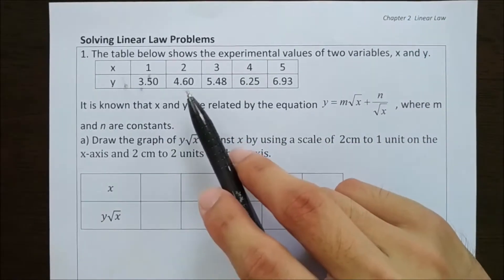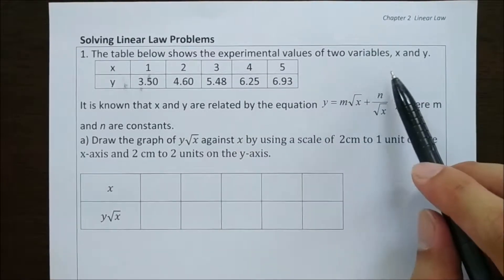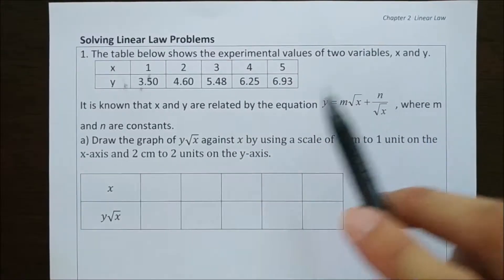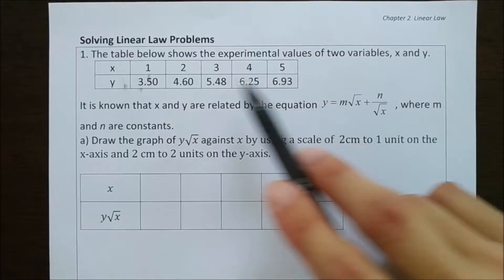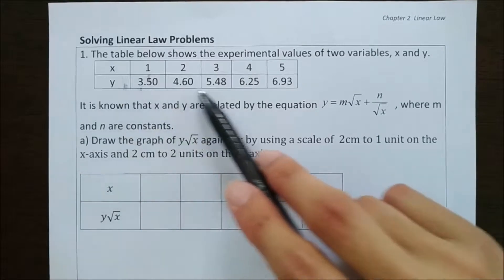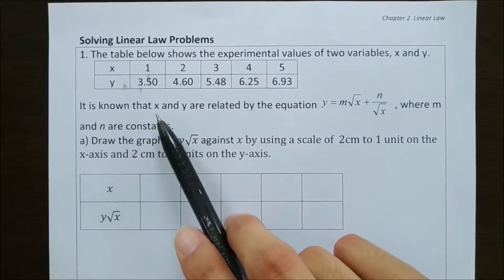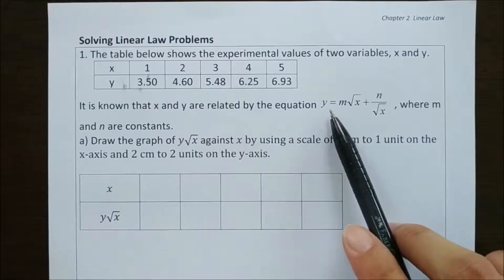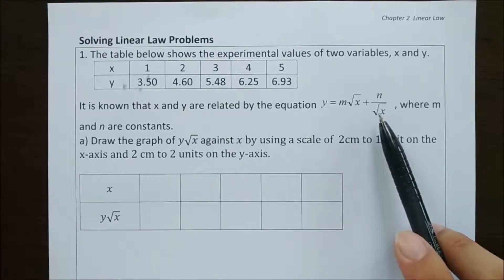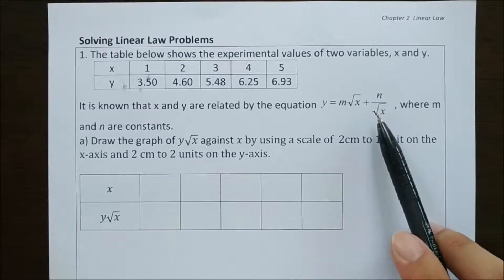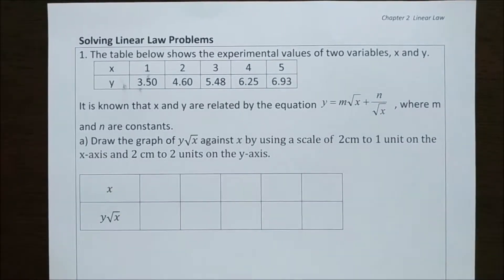The table below shows the experimental values of two variables, x and y. Given x is 1, 2, 3, 4, 5 and y has these values, it is known that x and y are related by this non-linear equation, where m and n are constants.